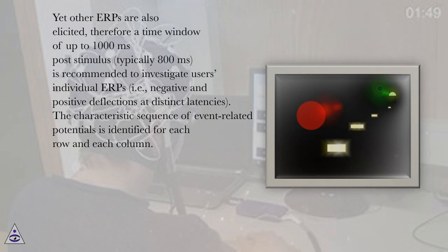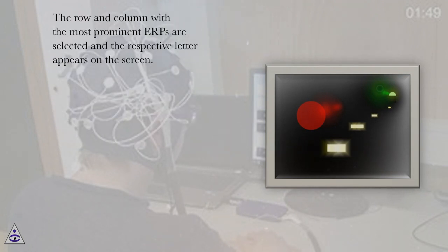The characteristic sequence of event-related potentials is identified for each row and each column. The row and column with the most prominent ERPs are selected and the respective letter appears on screen.